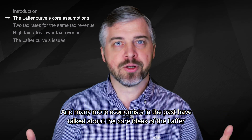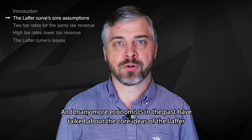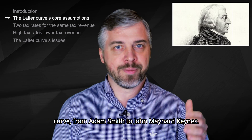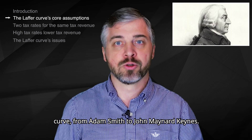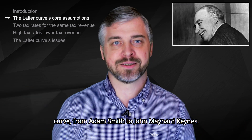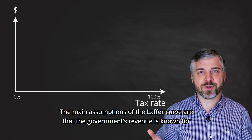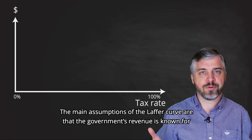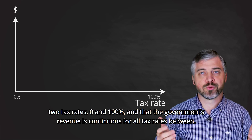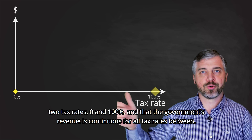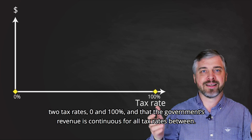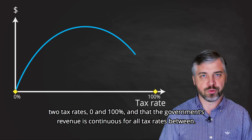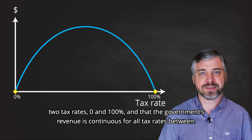And many more economists in the past have talked about the core ideas of the Laffer Curve, from Adam Smith to John Maynard Keynes. The main assumptions of the Laffer Curve are that the government's revenue is known for two tax rates — 0 and 100% — and that the government's revenue is continuous for all tax rates between.